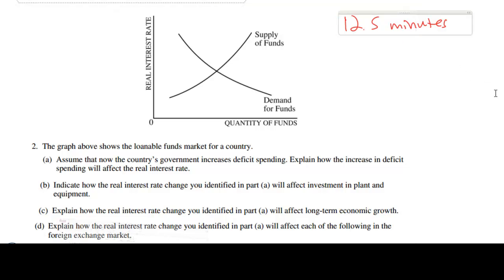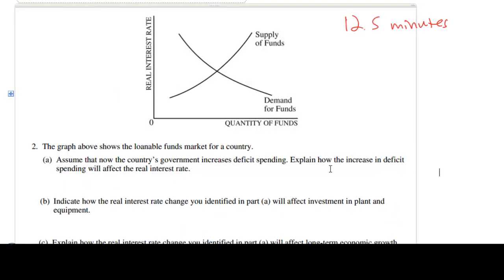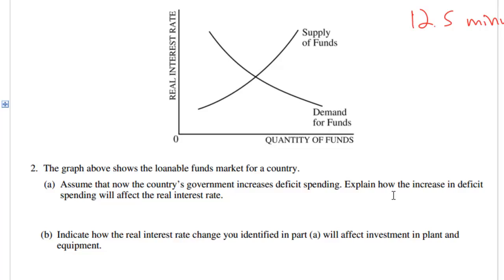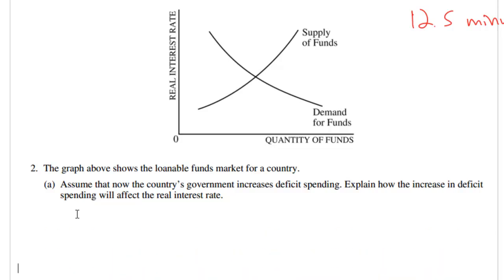Let's start by looking at question 2. This one starts with the market for loanable funds in the nation. The graph above shows the loanable funds market for a country. Assume that now the country's government increases deficit spending. Explain how the increase in deficit spending will affect the real interest rate.